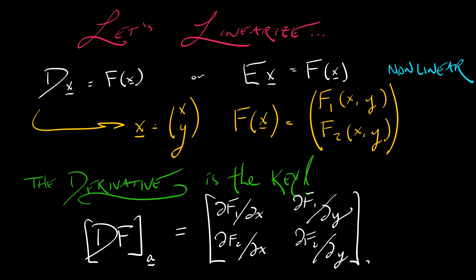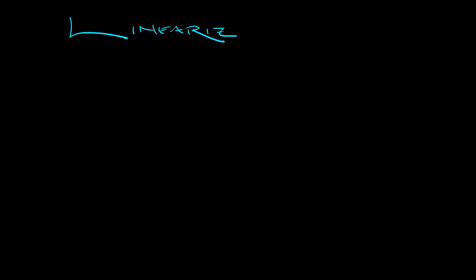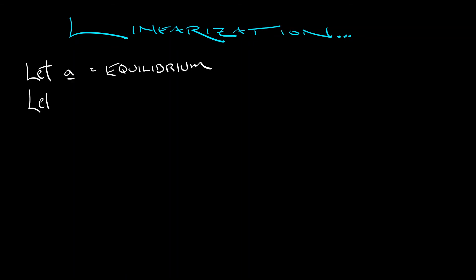Remember, columns correspond to inputs and rows correspond to outputs. We're going to use this derivative to linearize a dynamical system about an equilibrium, just like we did in Volume 1 — same derivation, slightly more complex notation. Let's let a be an equilibrium in our dynamical system, and let's choose a new vector-valued variable h to represent the distance between x and a.